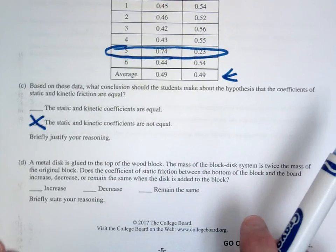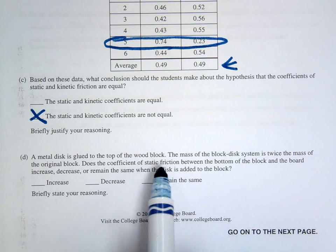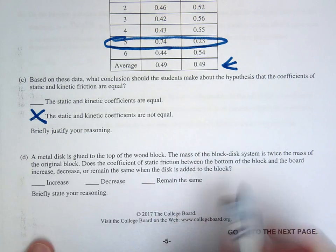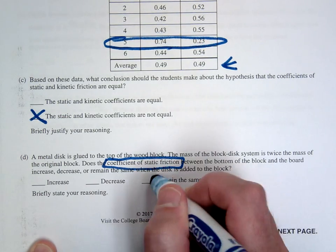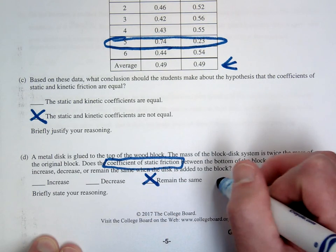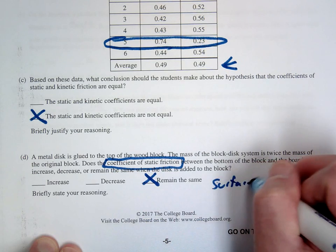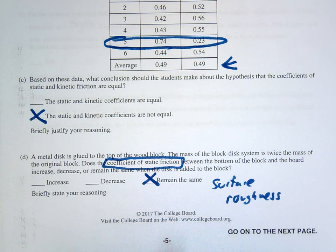Okay letter D. In letter D they're saying you're going to put mass on top of the block and it's twice. How does the coefficient of static friction compare? Well the coefficient should stay the same. Remember the coefficient of static friction is basically a measurement of surface roughness. And therefore adding more mass to the top of the block, though it should increase the friction, it does nothing to affect the surface roughness. So there will be no effect. The coefficient of friction will stay the same.